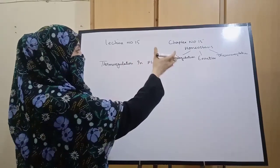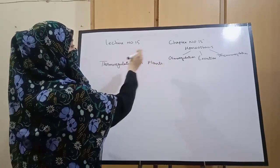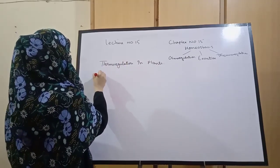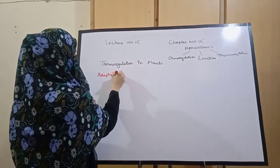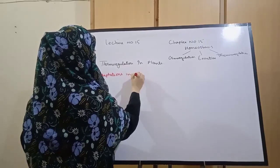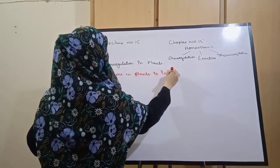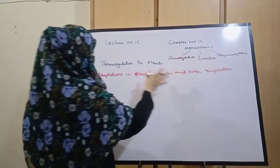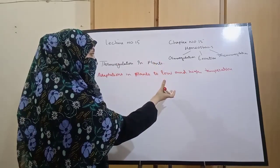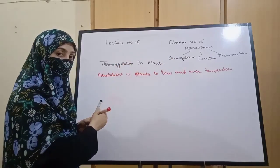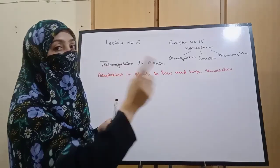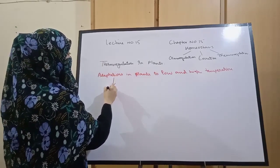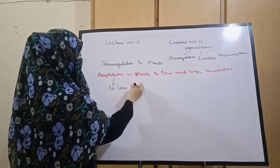Just as we discussed osmo-regulation and excretion in plants, similarly today we are starting thermoregulation in plants. Today's sub-topic is adaptations in plants to low and high temperature — what strategies and adaptations are found in plants when they face low temperature. We will discuss both cold and hot environments for plants. First we discuss adaptations in plants to low temperature, and also adaptations in plants to high temperature.